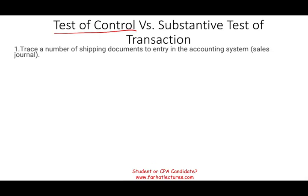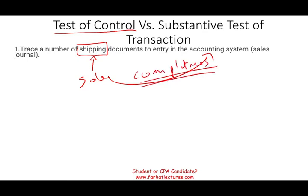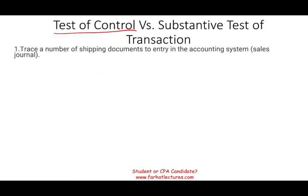The first example: trace a number of shipping documents to entries in the accounting system. We're looking at shipping documents — physical documents that support our transactions — and tracing them back to entries in the accounting system. This is a substantive test of transaction. We want to make sure that if we have a shipping document, the sale is recorded. The fear here is completeness — transactions may not be completely recorded. The audit objective is completeness.